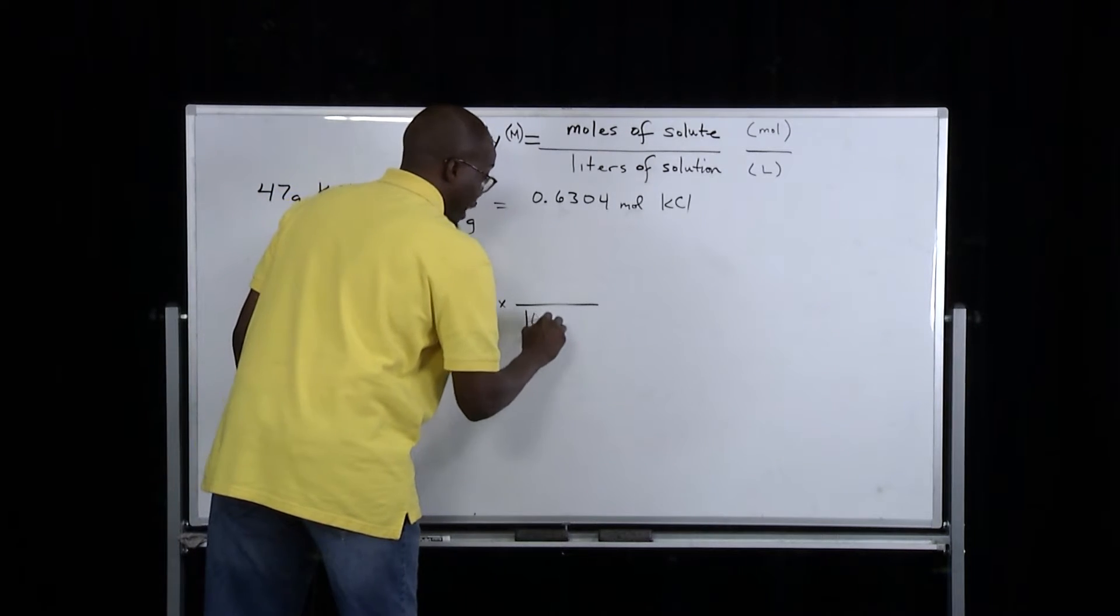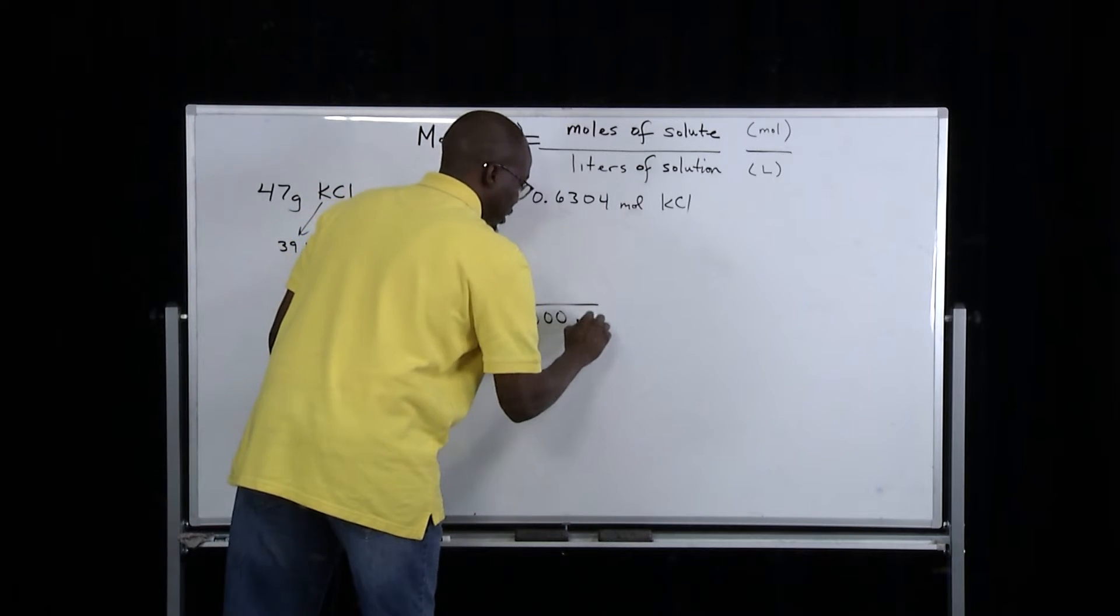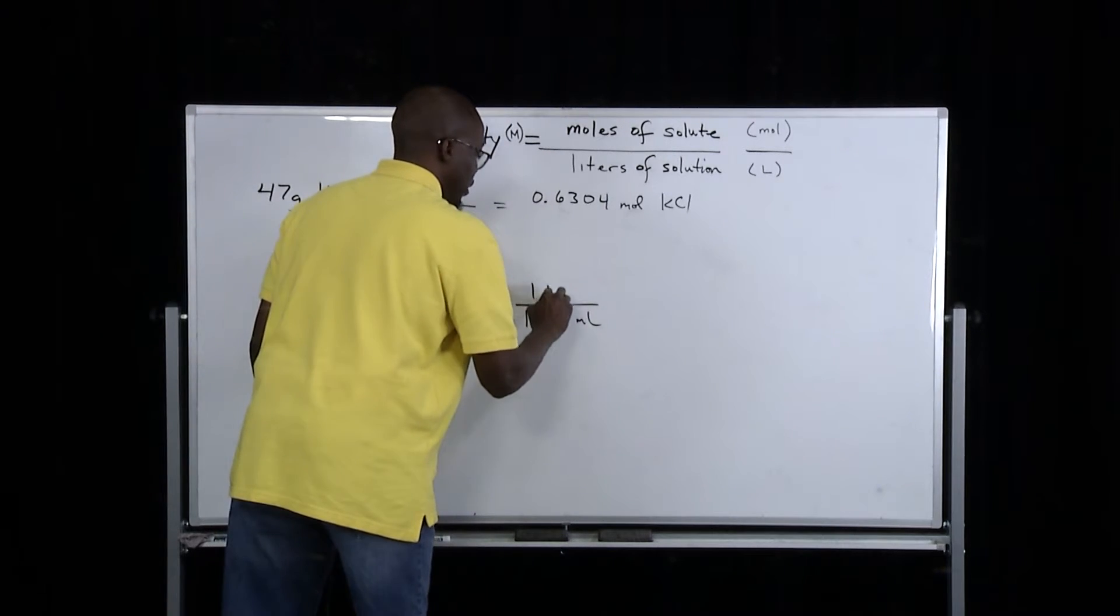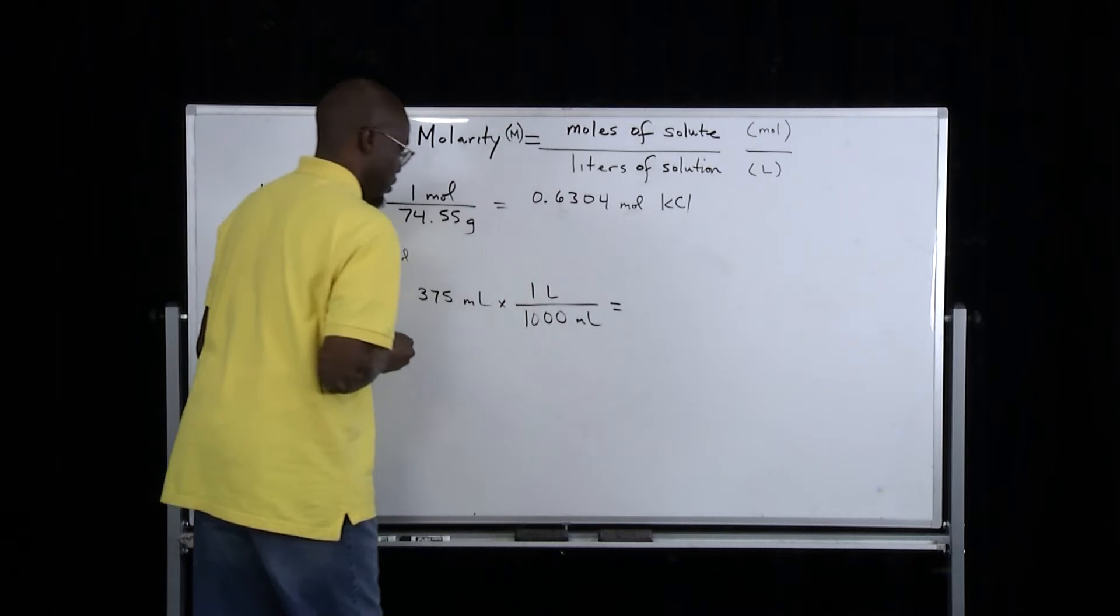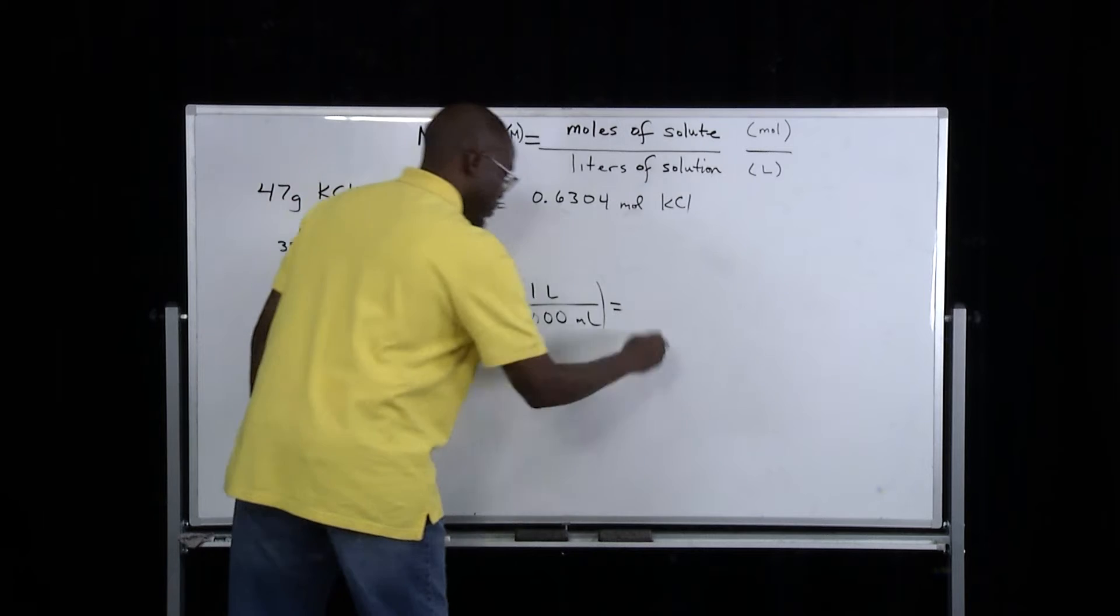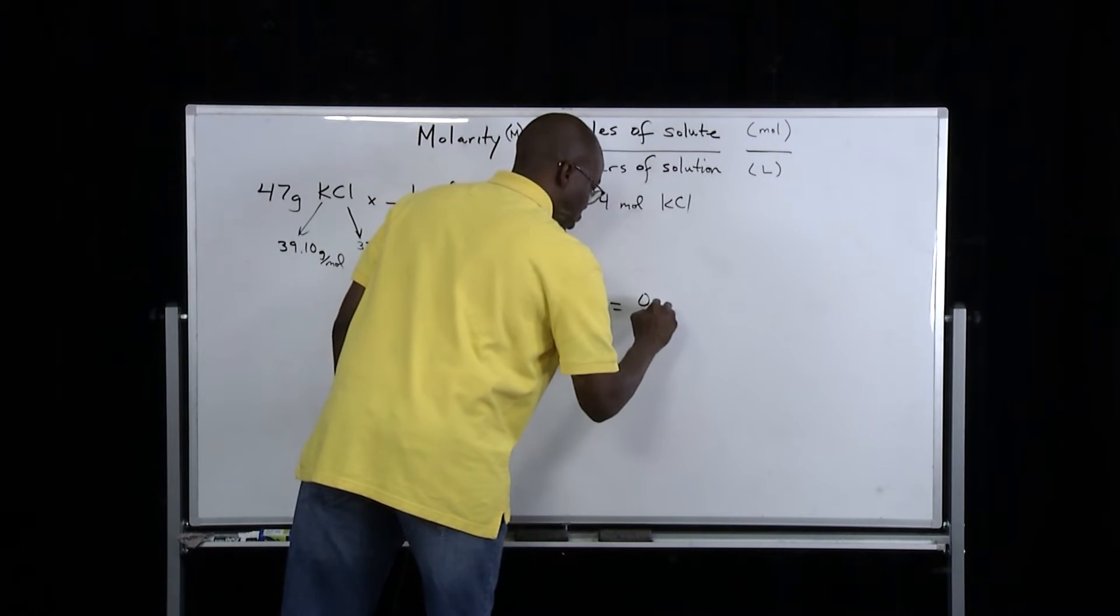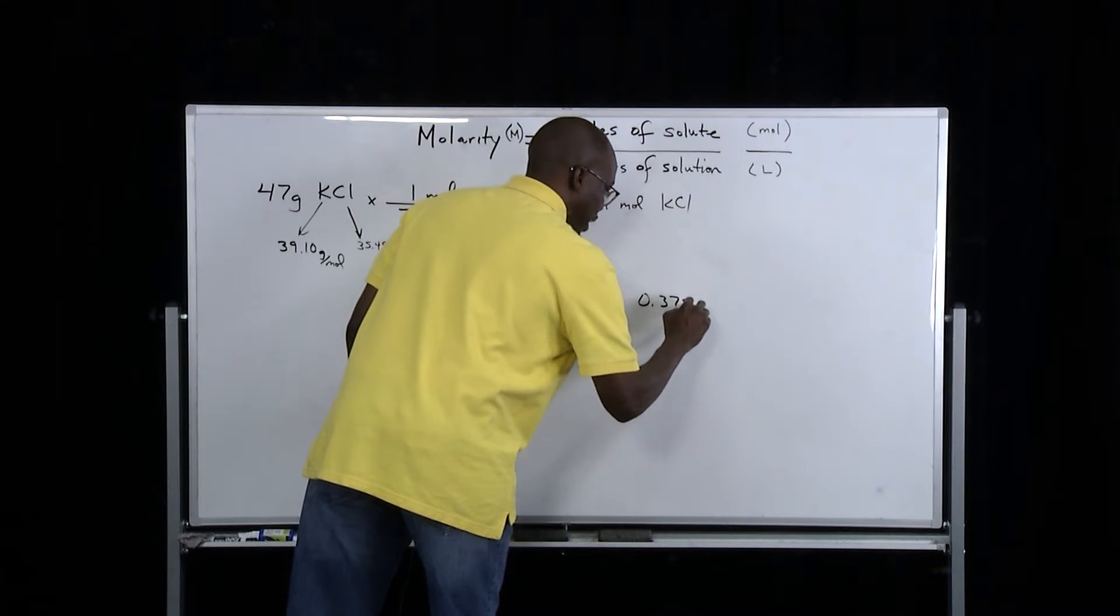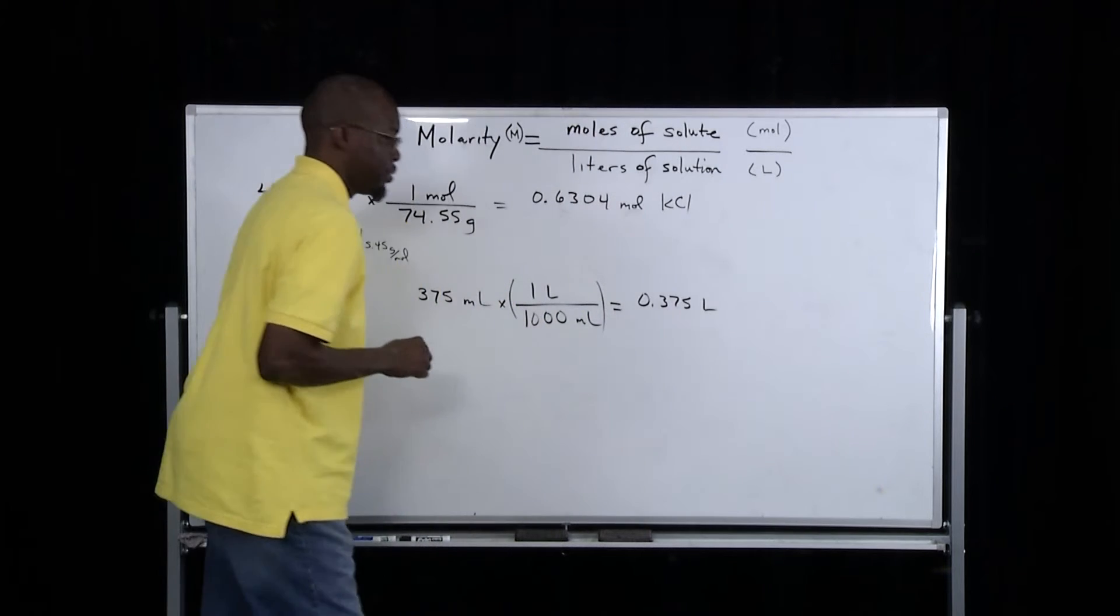There are 1,000 milliliters for every one liter. We use this as a conversion factor in which we'll get 0.375 liters of solution.